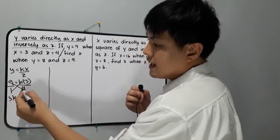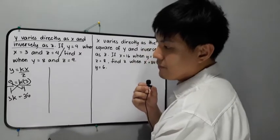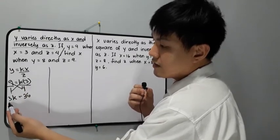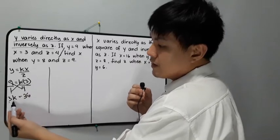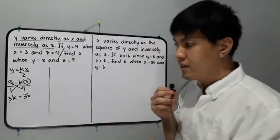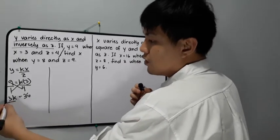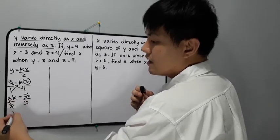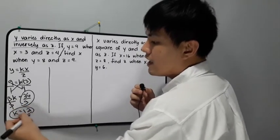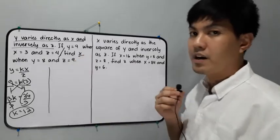Multiplying 9 by 4 gives 36. So we have 3k equals 36. To isolate the constant k, we divide both sides by 3, cancel the 3, and simplify: 36 divided by 3 is 12. So the value of k is 12.